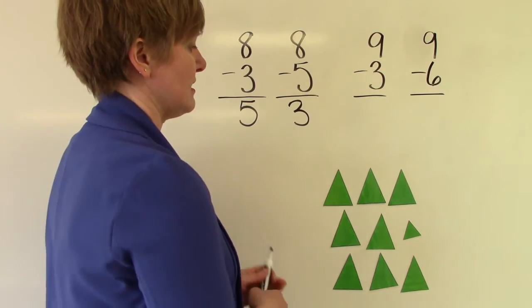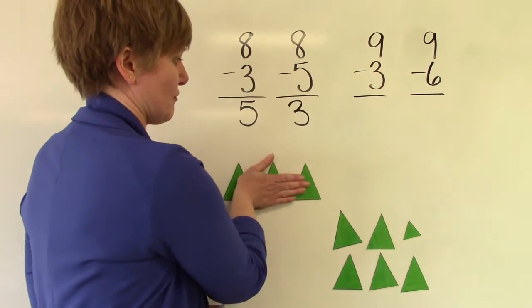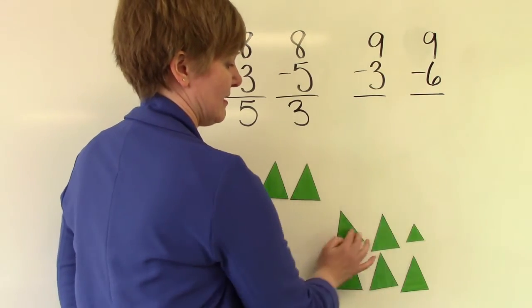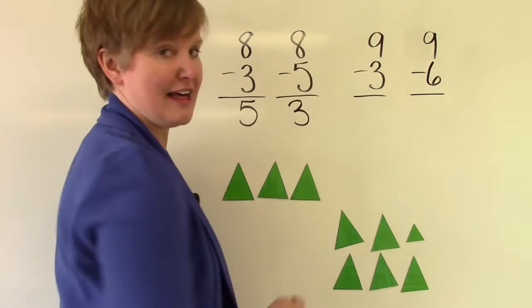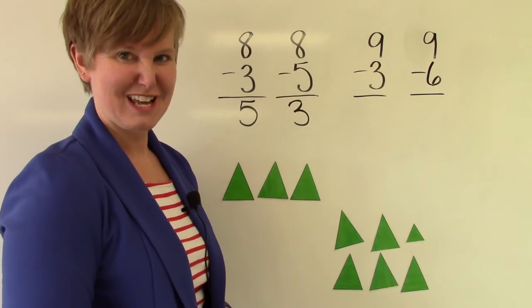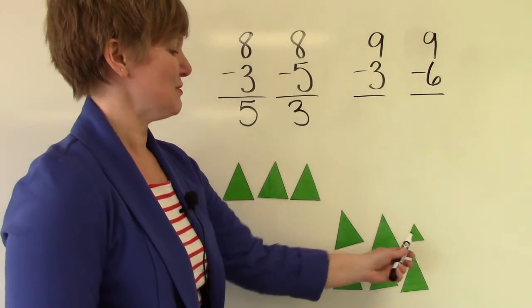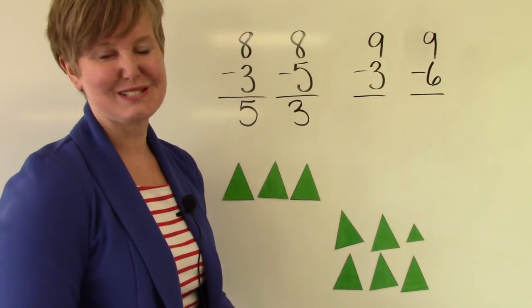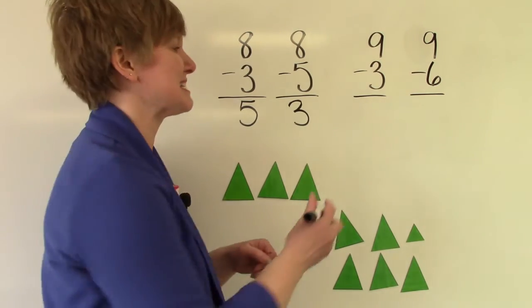Well, if we have nine and we take three of them away, how many are left? Can you count them? One, two, three, four, five, six. Two groups of three is six.